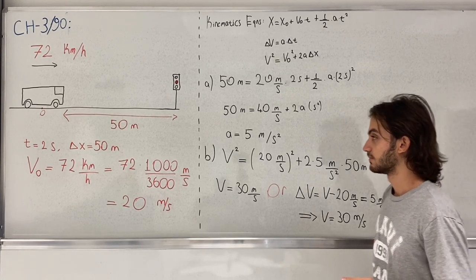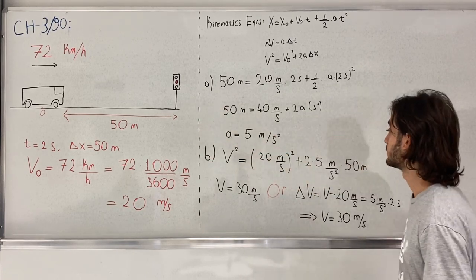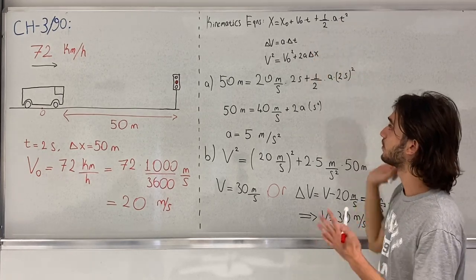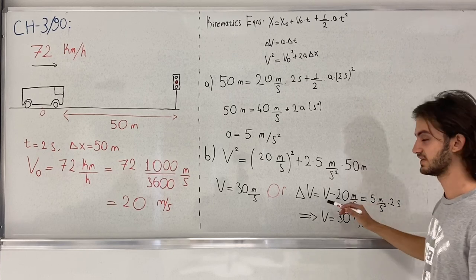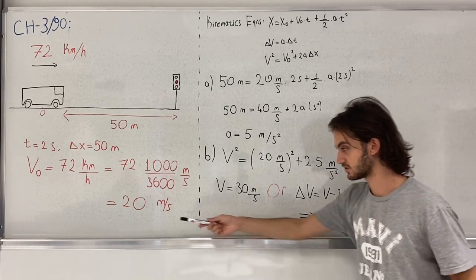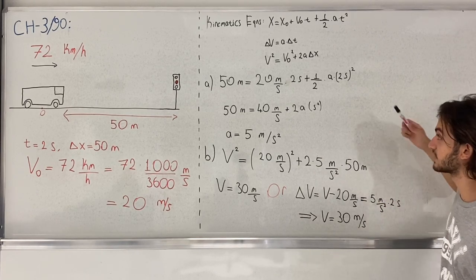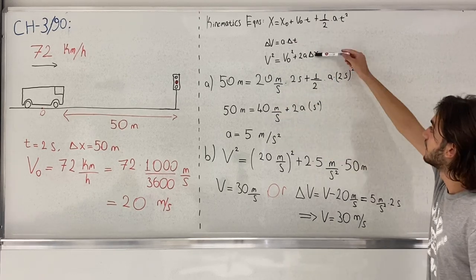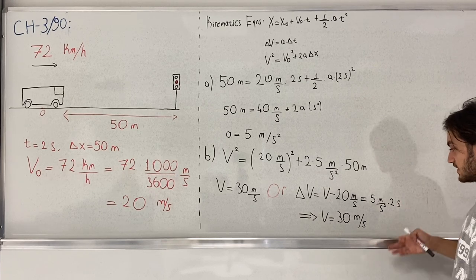In part B, the question asks what is the final velocity of the ambulance when it catches the lights. We can use these equations; using this one is simpler because it's in a more confined form. We have V final minus our initial velocity of 20 meters per second equals 5 meters per second squared times delta t. The ambulance covers the distance in 2 seconds, so the final velocity is 30 meters per second.